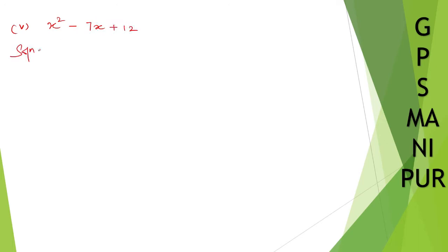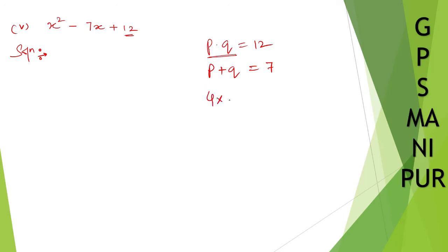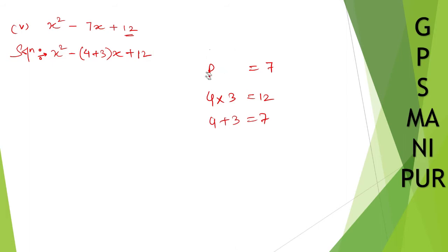Solution. We need any two numbers such that if you multiply you will get 12 and if you add or subtract you will get 7. So p into q must be 12 and p plus q must be 7. So what is that number? 4 and 3: 4 into 3 is 12, and 4 plus 3 is 7. So we split as x squared minus 4 plus 3, x plus 12. I hope you are understanding this one.